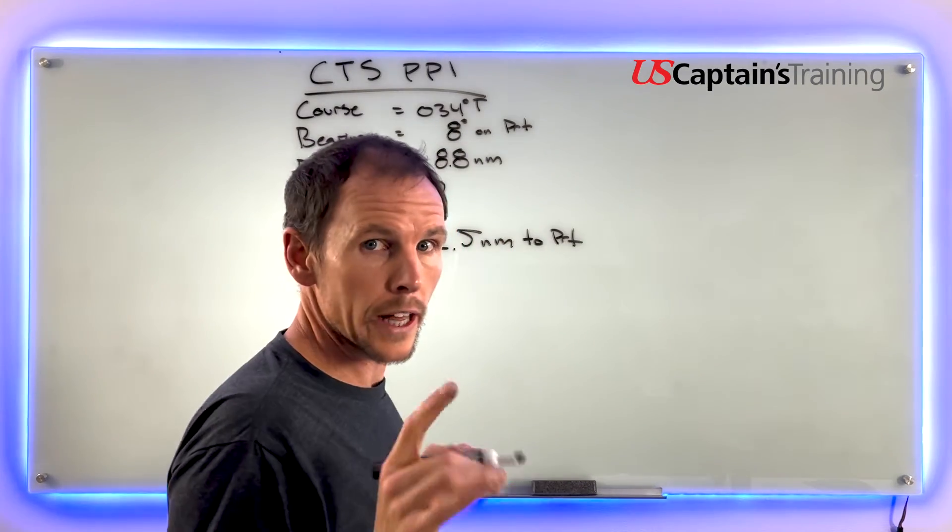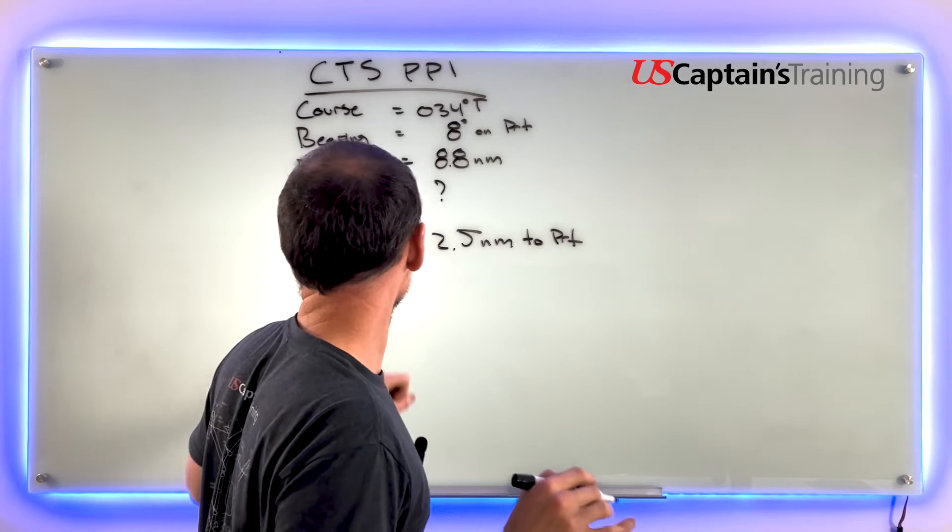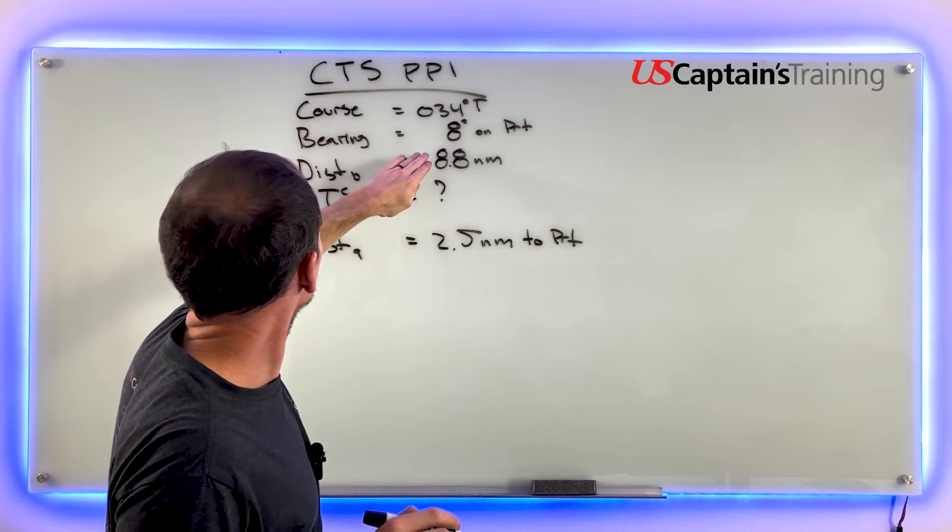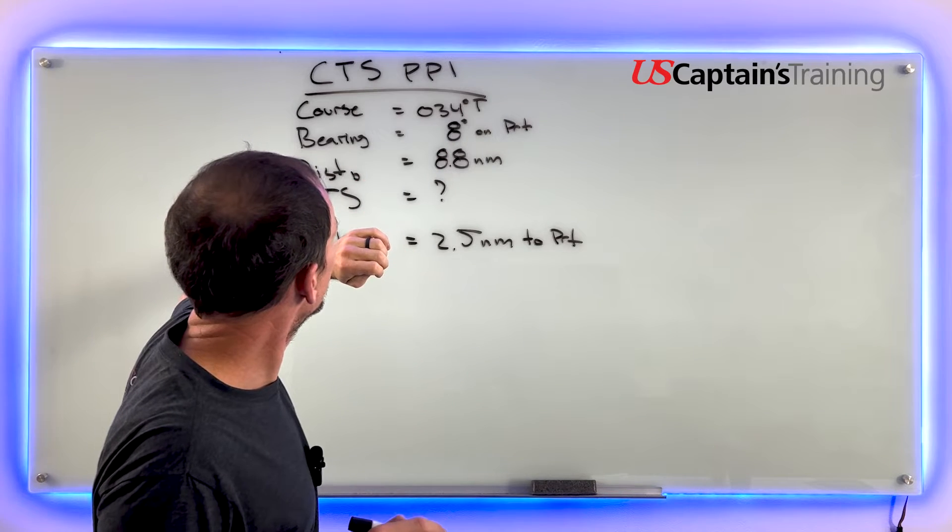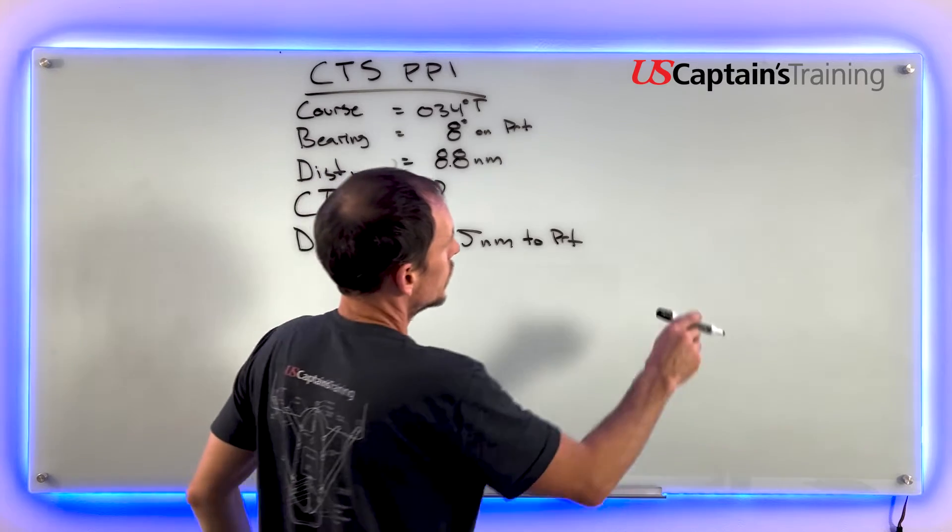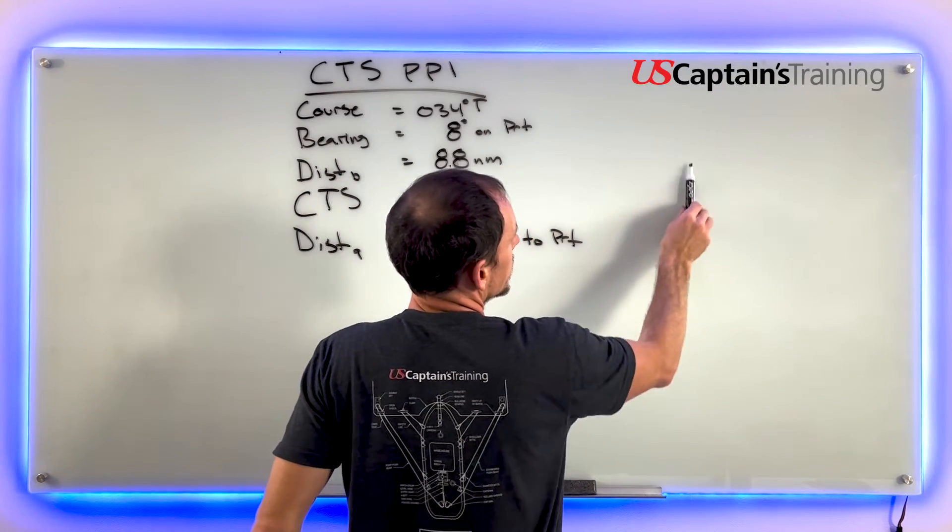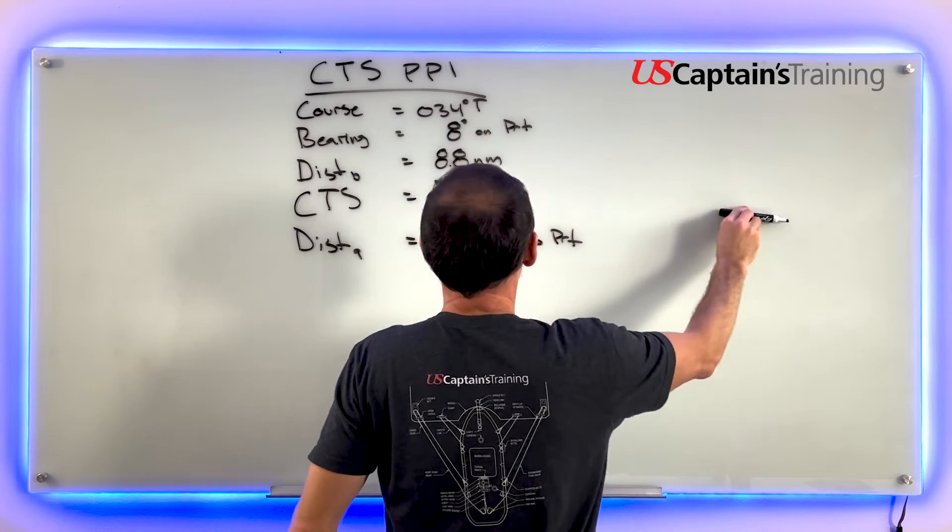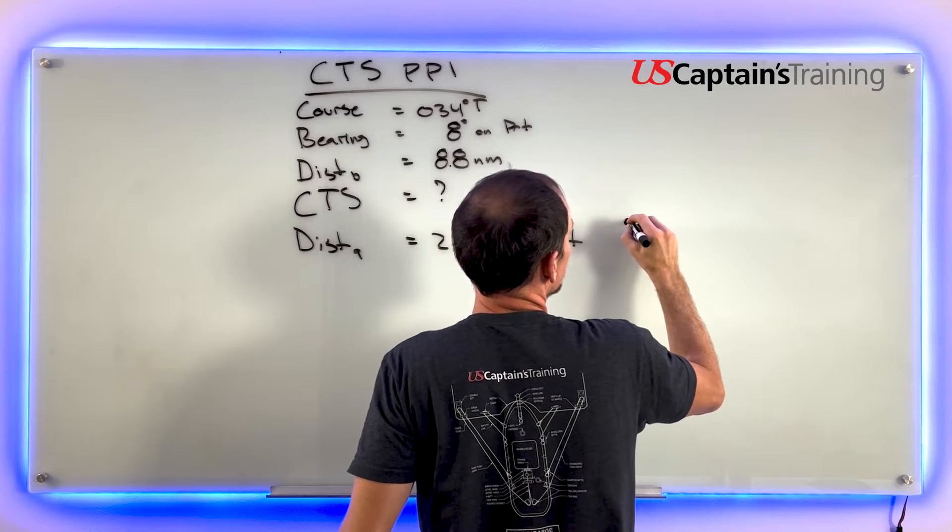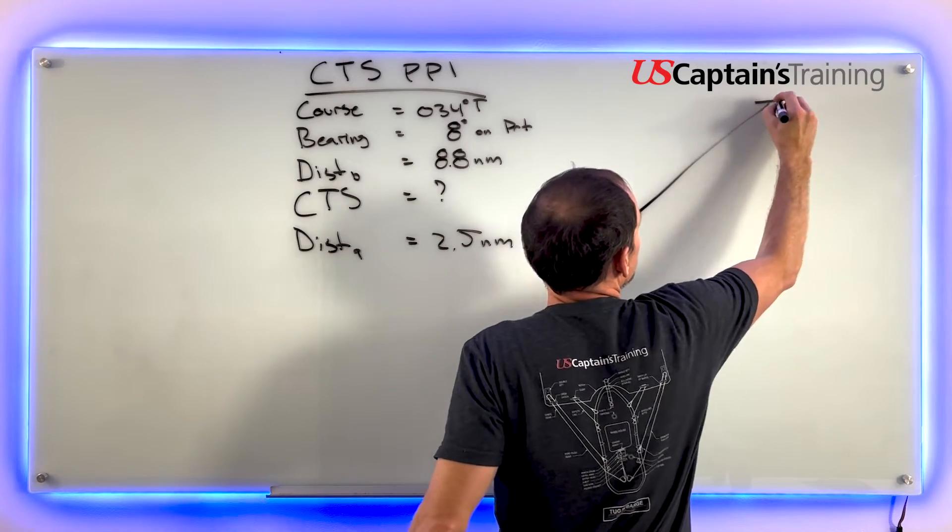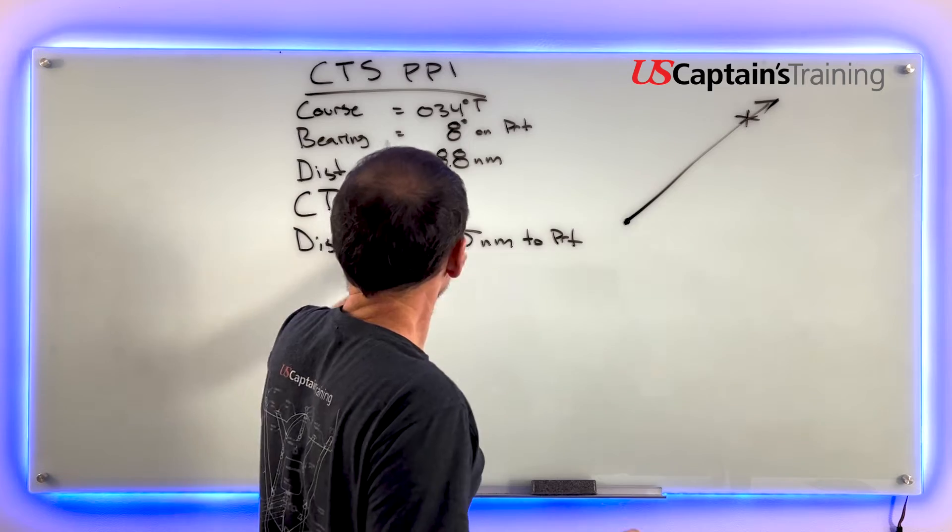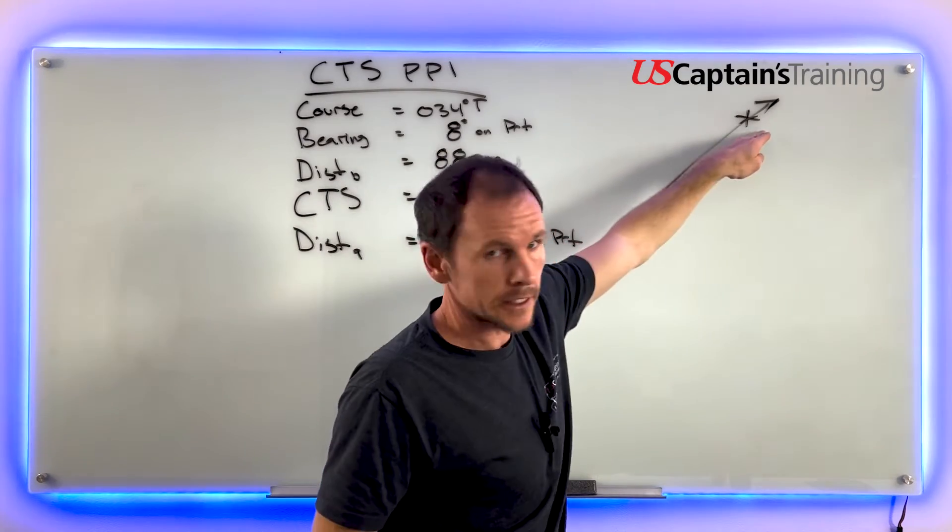We're on course 34 and we see something 8 degrees on port, 8.8 miles away. This is zero, this is 90, this is 45. We're on 34, so we're going to be something like this.